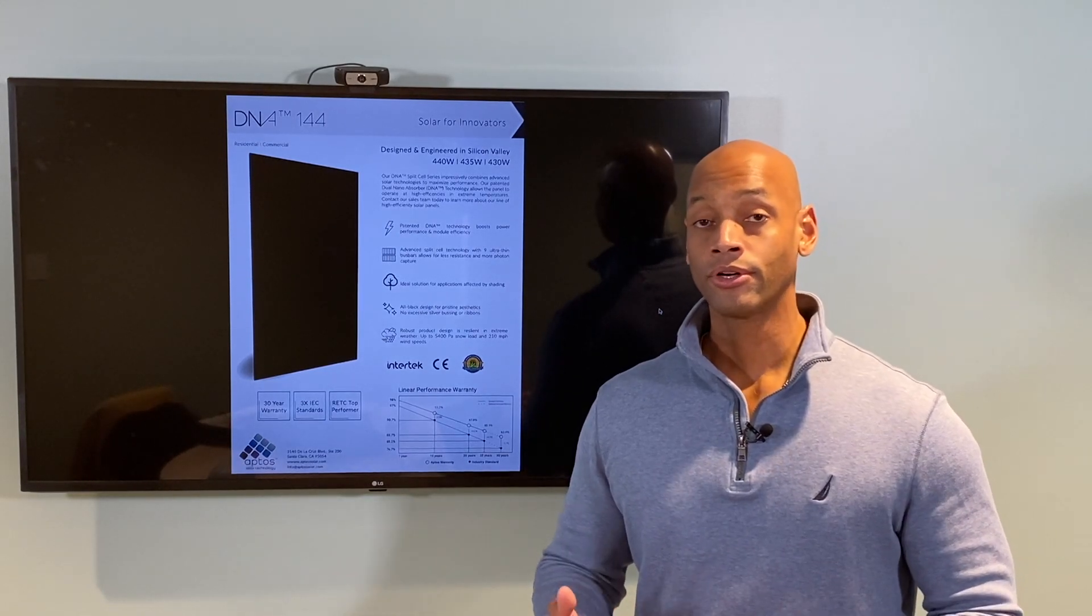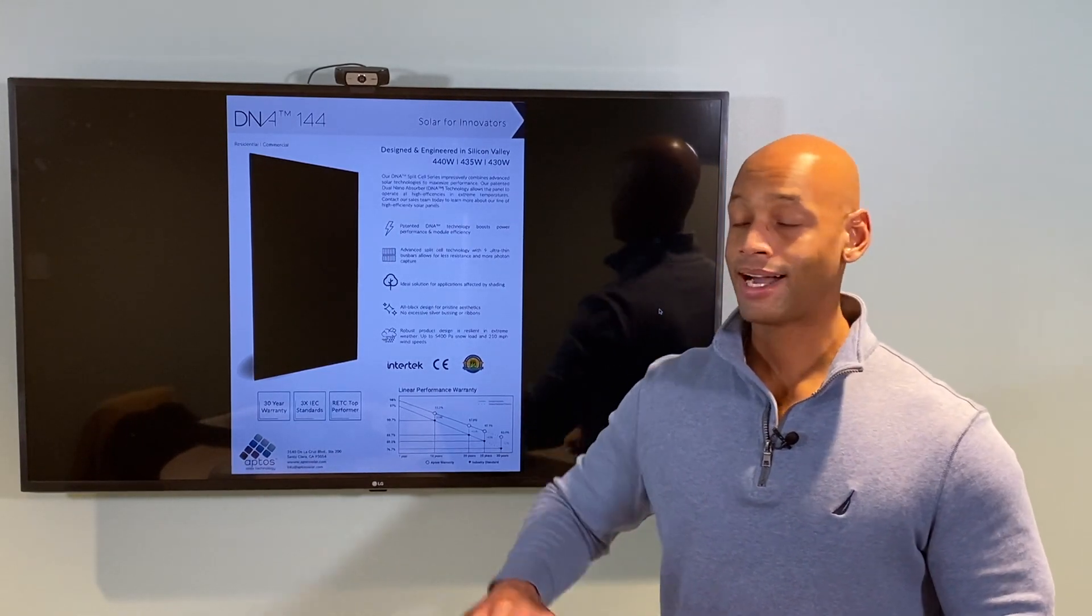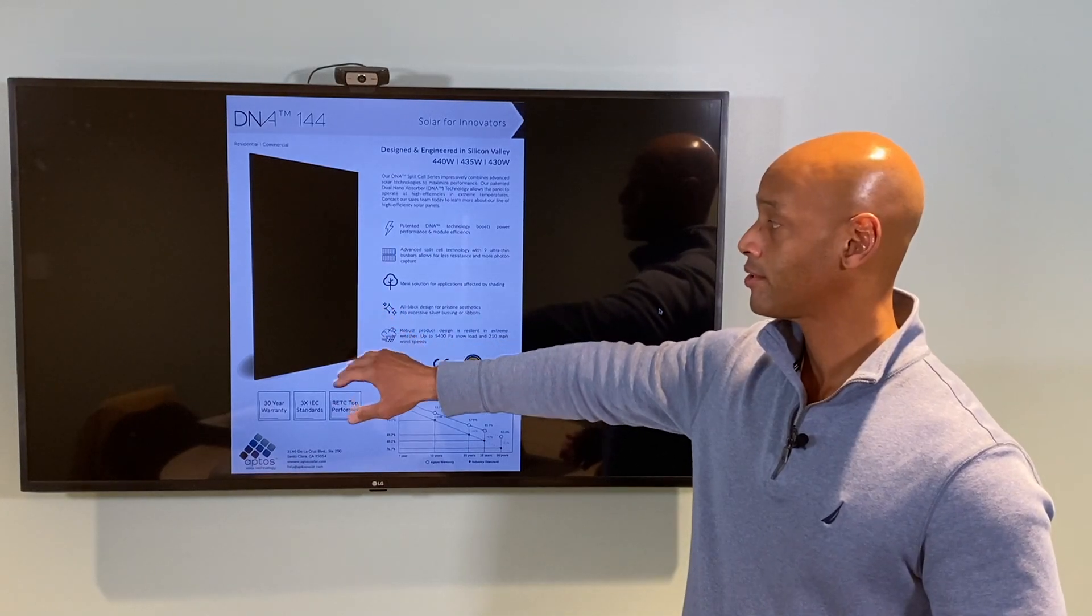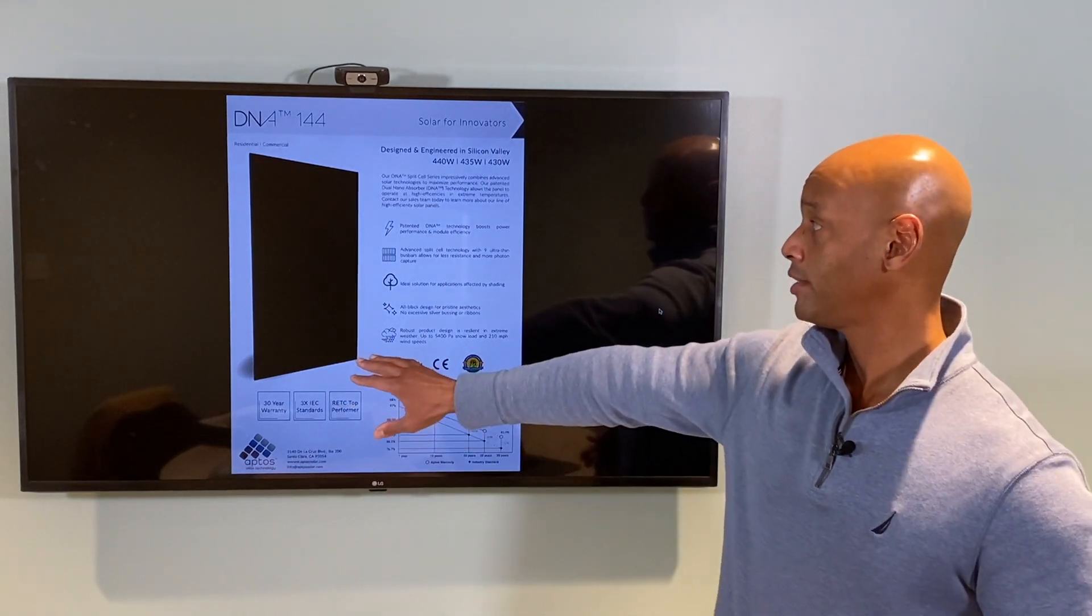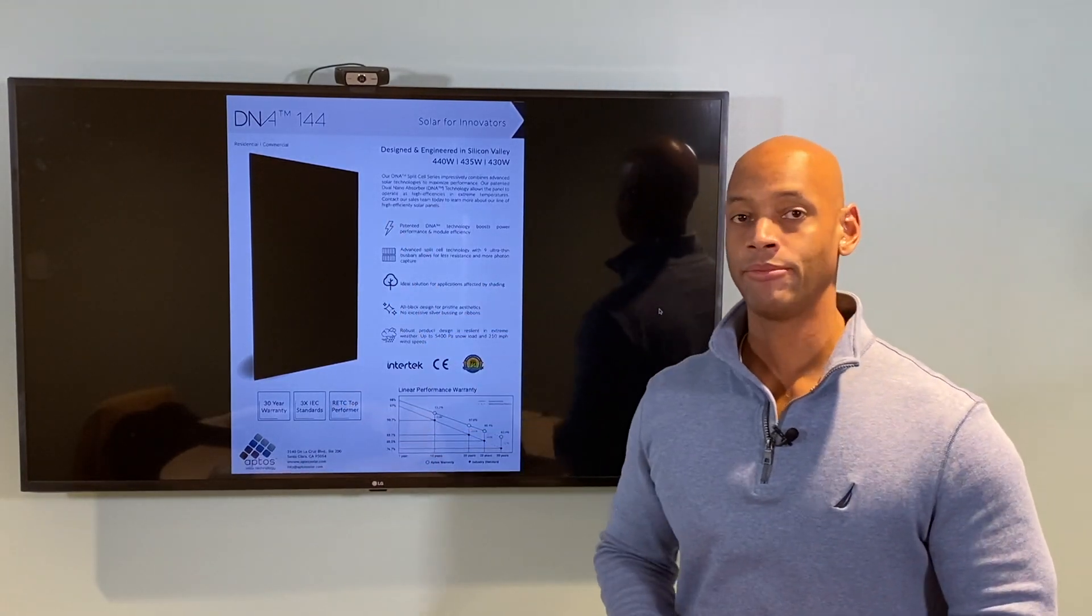However, the new current generation of solar panels provide a lot of shade mitigation features right here at the solar panel level. So using the 72 split cell design provides shade mitigation.